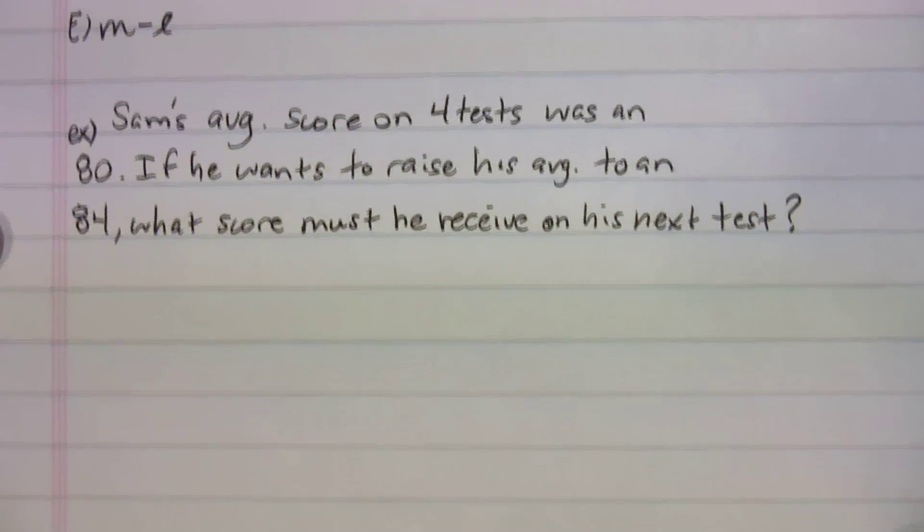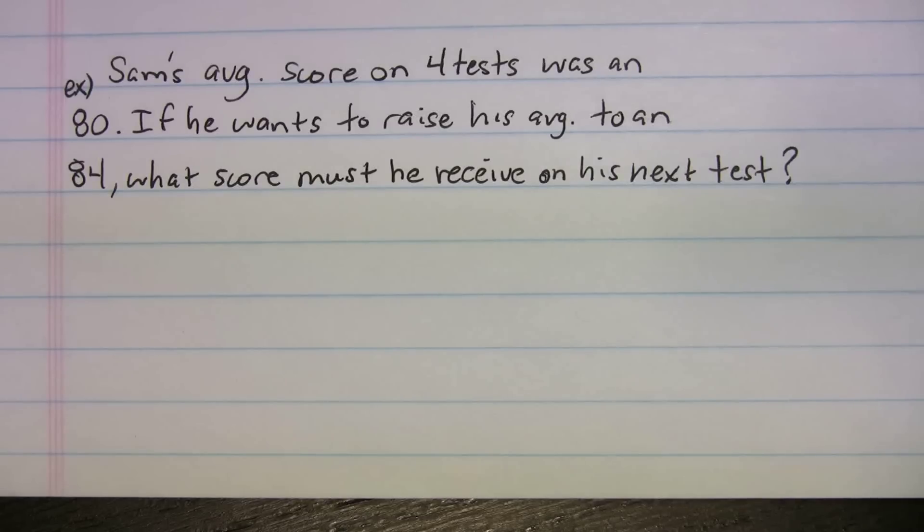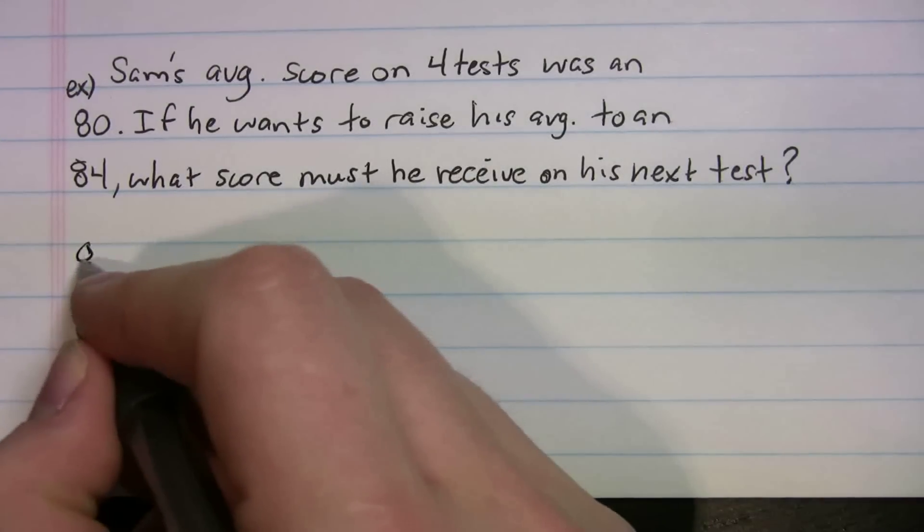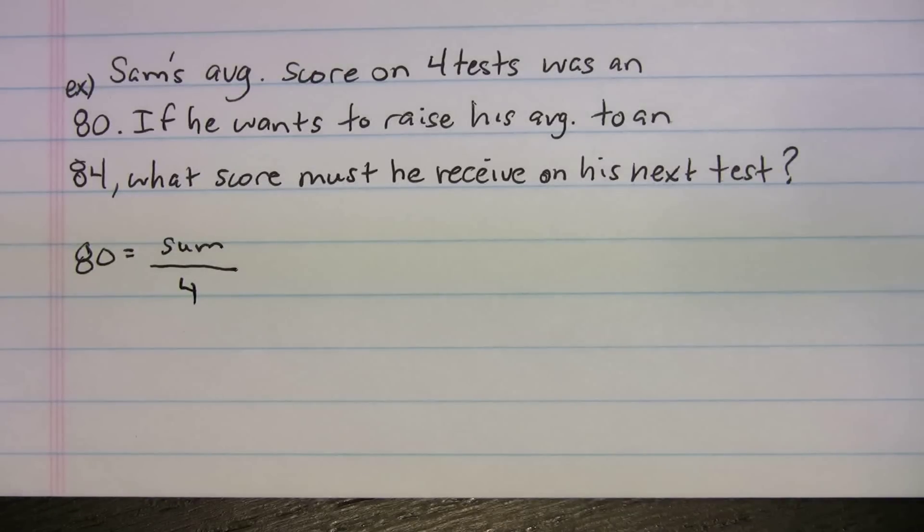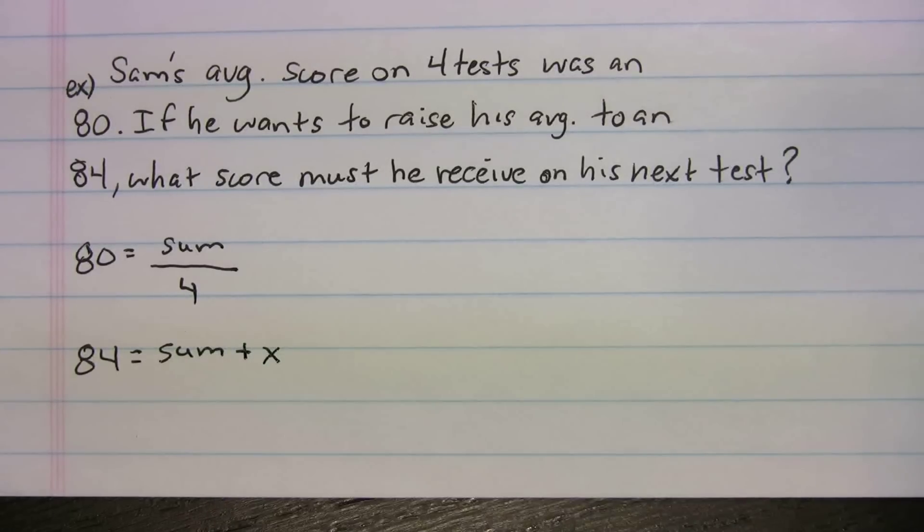Okay, let's do our third and final one. Sam's average score on four tests was an 80. If he wants to raise his average to an 84, what score must he receive on his next test? So to do this one, again, you can pause the video to try it on your own. I'm going to go through the explanation. It seems like we're going to need two different equations. So let's work on making our two different equations. Sam's average score on four tests was an 80. So 80 is going to equal the sum. I don't know what that is, but I've got four tests, right? And then my other one, if he wants to raise his average to an 84, so 84 is going to be equal. Now it's still the same sum, but I'm adding a test, right? There's going to be some new test. And how many tests am I dividing by now? Well, originally it was four, but since I'm adding a new test, we're going to divide by five.